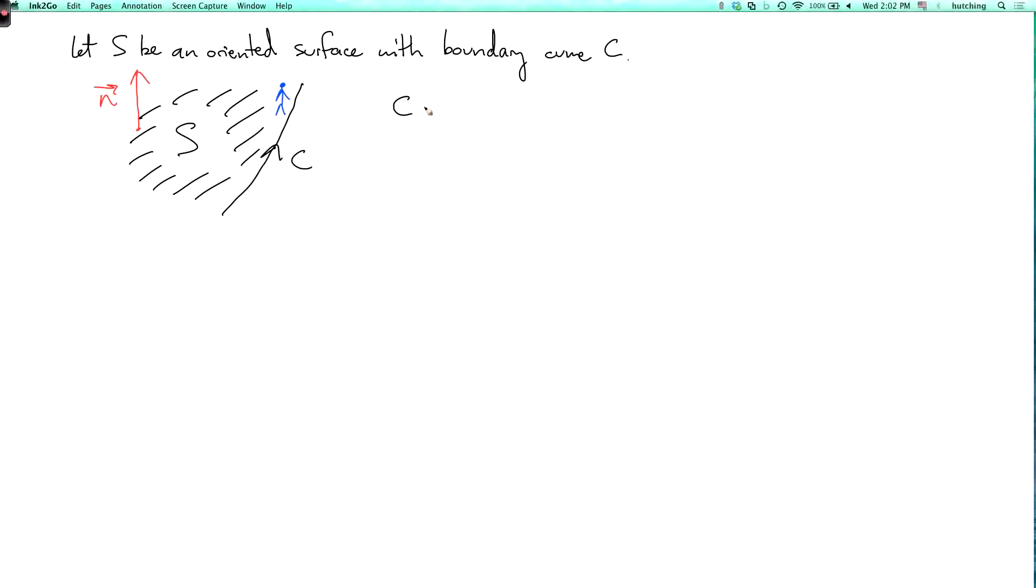So we say that C is positively oriented if it is oriented as shown. So this depends on the orientation of the surface. If you switch the orientation of the surface, you have to switch the orientation of C also.